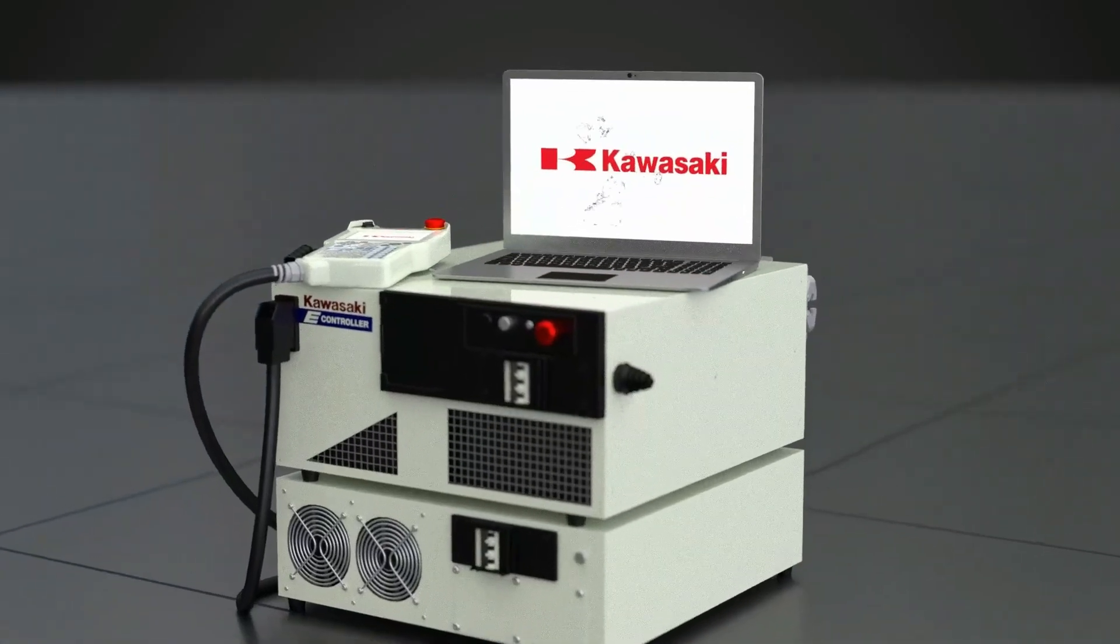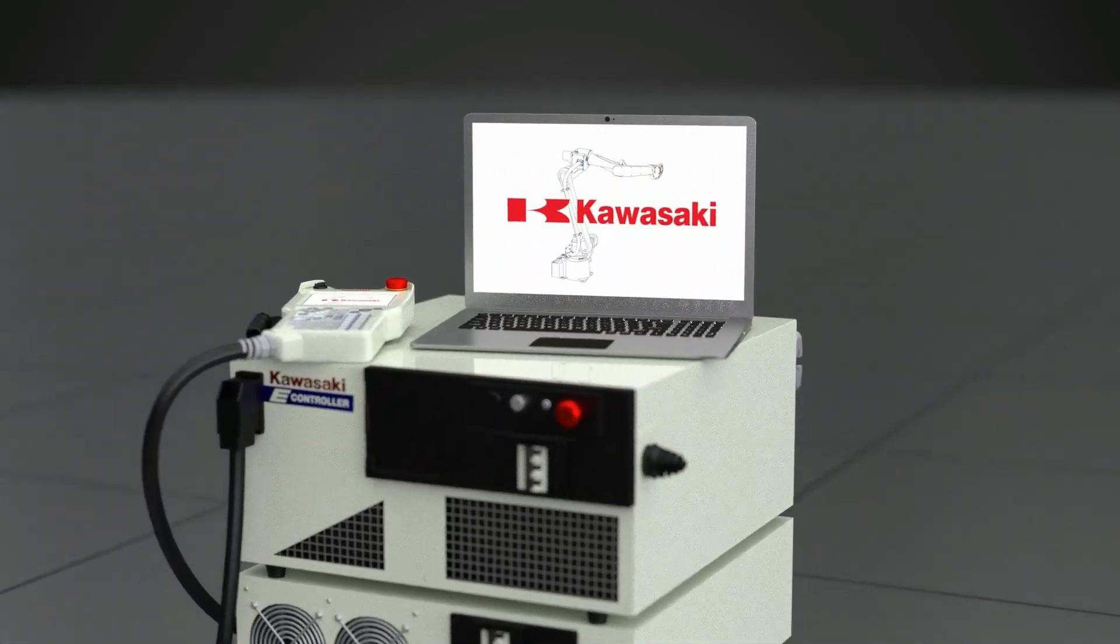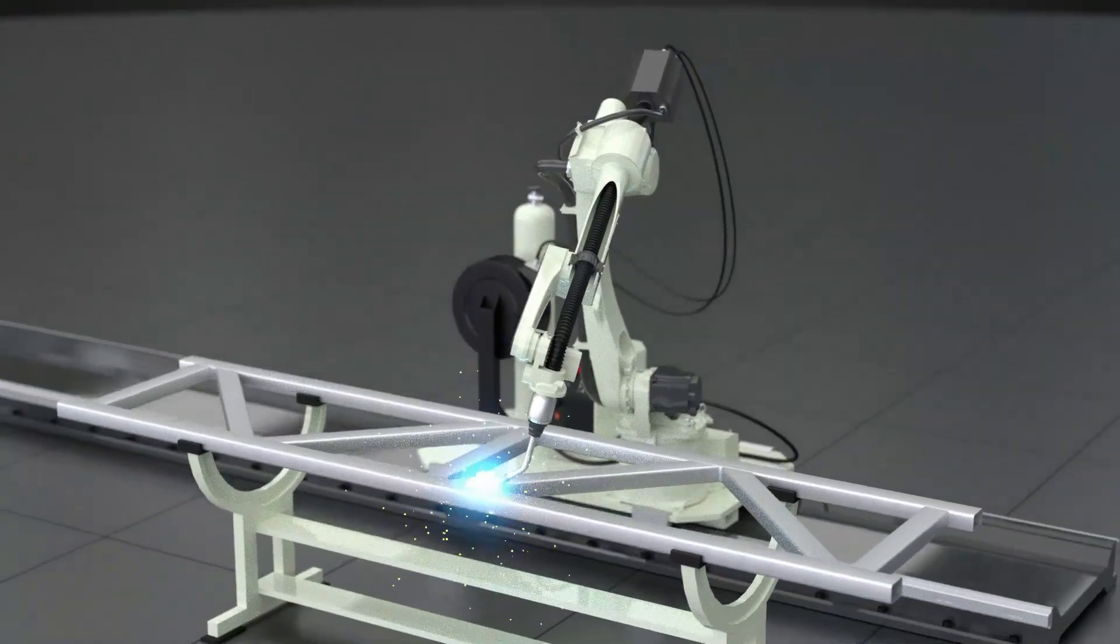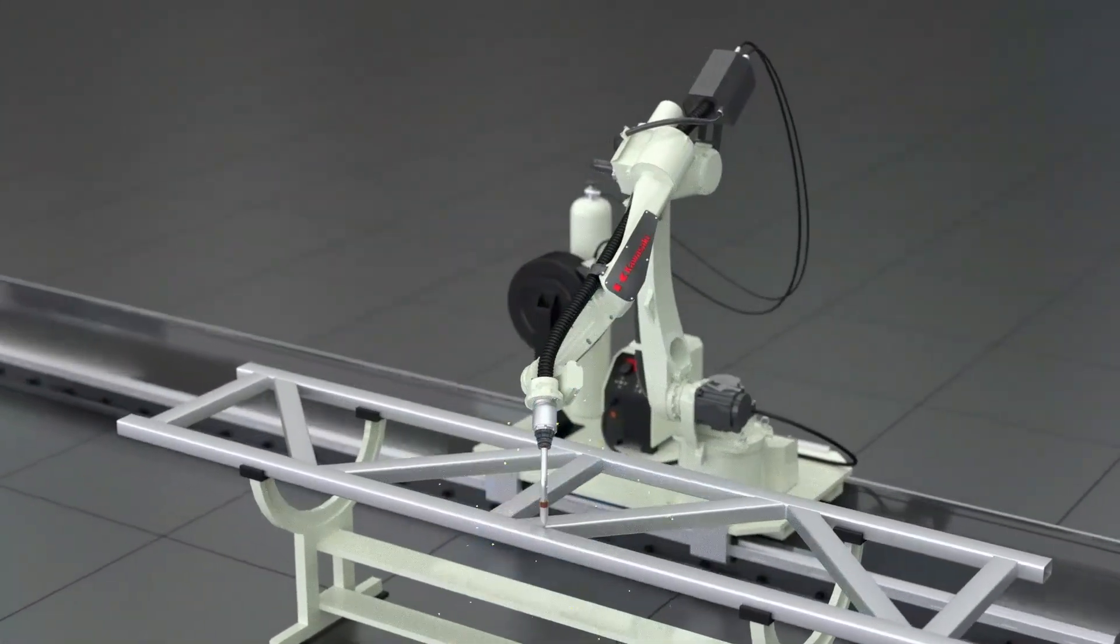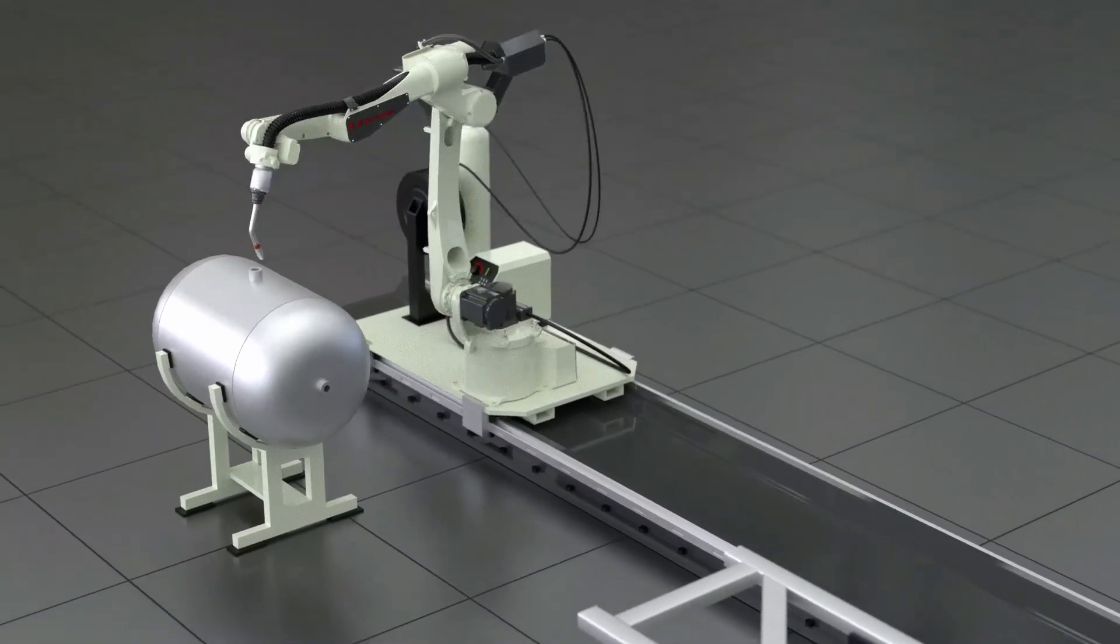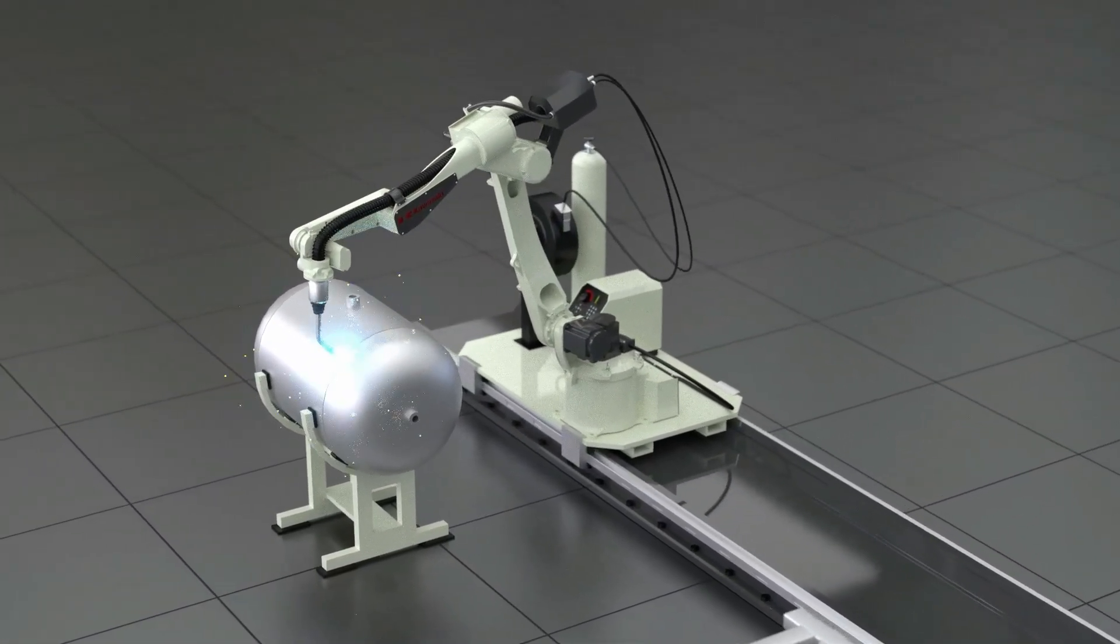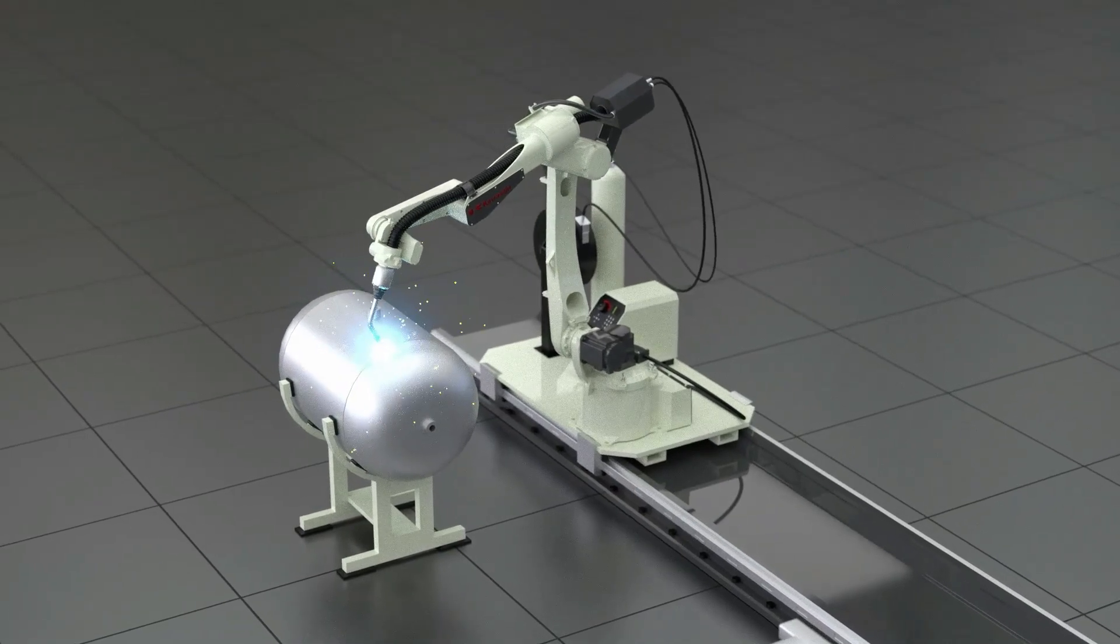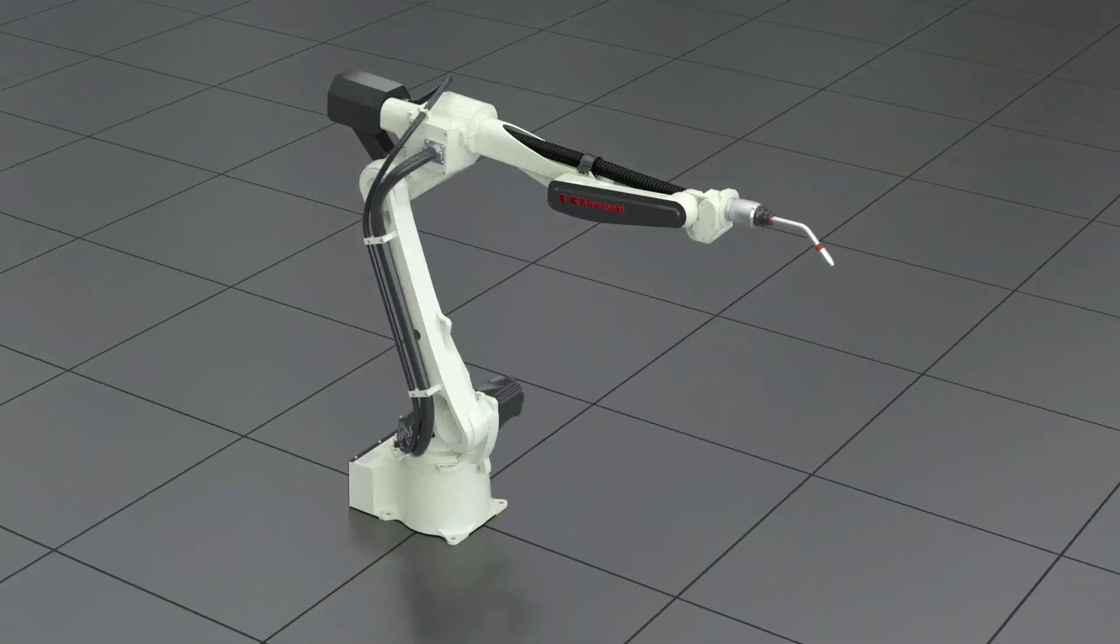The BA-6L is equipped with an arc welding-specific software environment to enable quick and easy programming of the process path. Its flexibility and high accuracy make the Kawasaki BA-6L ideal for a wide range of arc welding applications.